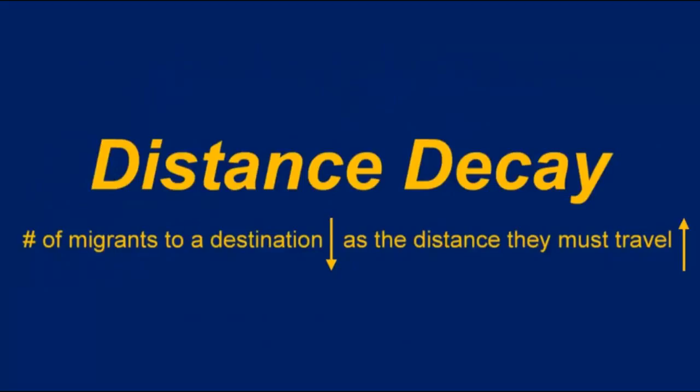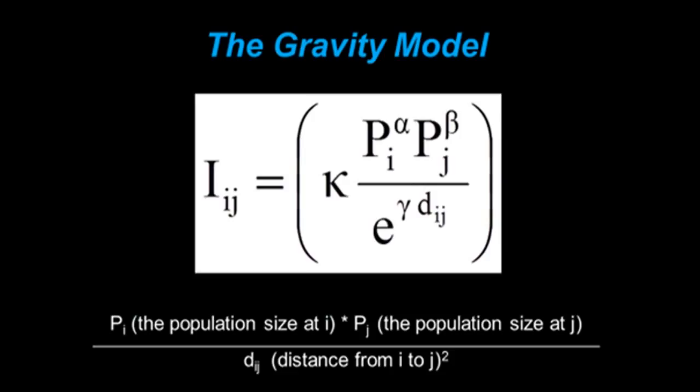This can be measured using the gravity model. The gravity model is designed to predict the interaction between two cities, or the migration between two cities, on the basis of the population sizes of the two cities but also the distance between them. From a purely math perspective, this is simply multiplying the population sizes of two different cities and then dividing that result by the distance between them.